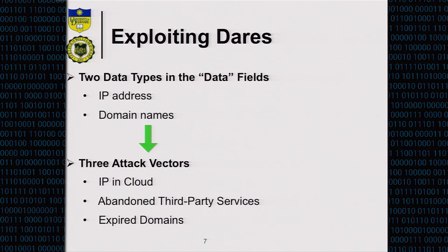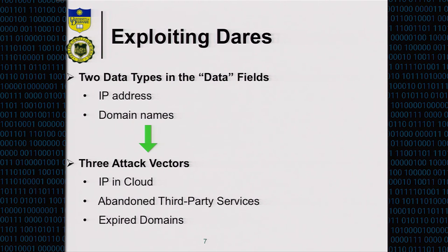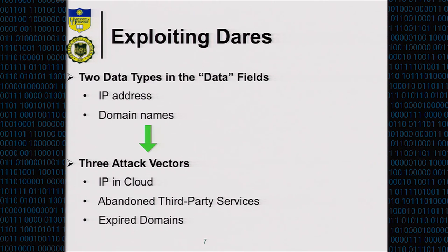The third problem is expired domains, including Apex domains — sometimes called naked domains, like IBM.com or AT&T.com without www. What happens if the domain is expired but you didn't clean up your DNS records on the DNS servers? People still believe this domain exists, and somebody else can register and claim ownership. That also leaves a problem.